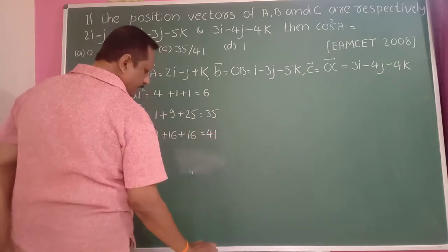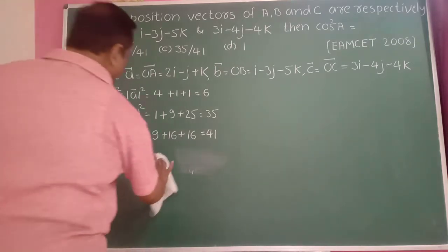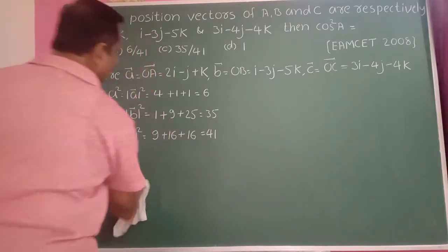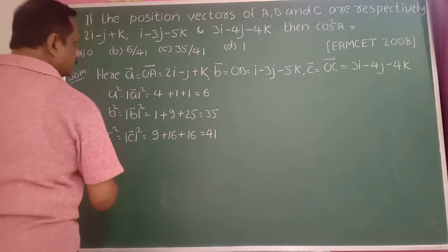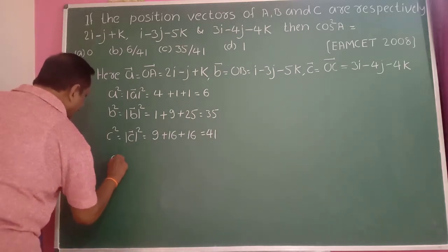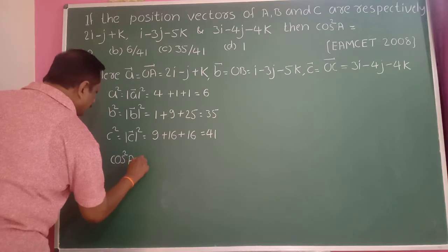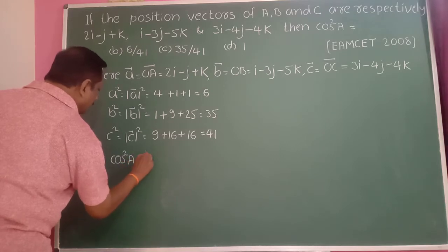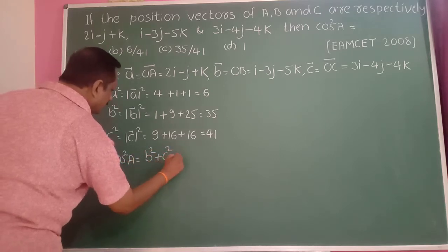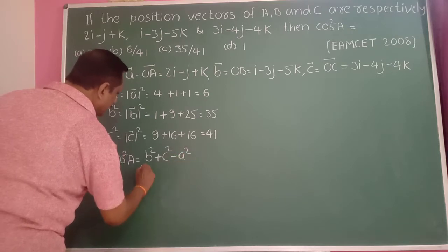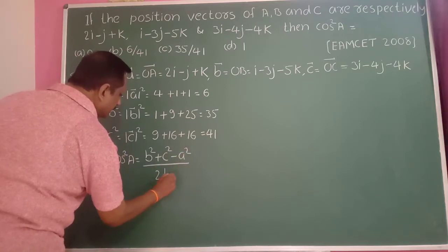You know the standard cosine rule. According to the cosine rule, cos squared A is equal to B squared plus C squared minus A squared, divided by 2 into B into C.